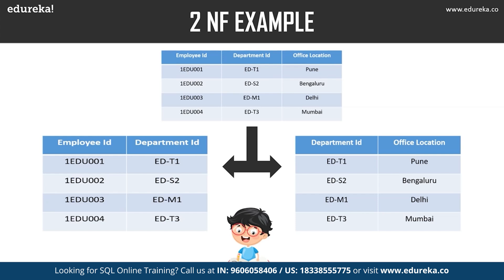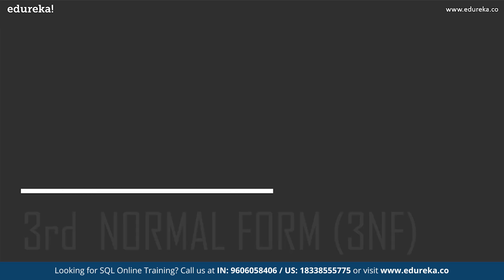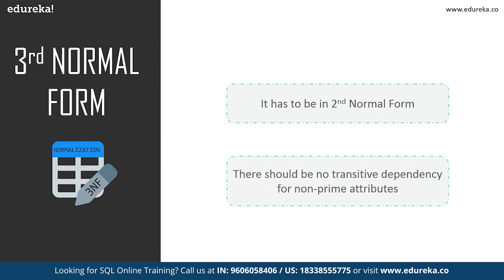Now that we have learned first and second normal form, let's move to third normal form. Third normal form is used to reduce duplication of data and ensure referential integrity. The table must be in second normal form, and no non-prime attribute may be transitively dependent on another non-prime attribute. Simply put: if C depends on B and B depends on A, then transitively C depends on A — this should not happen in third normal form. All non-prime attributes must depend only on the prime attributes.